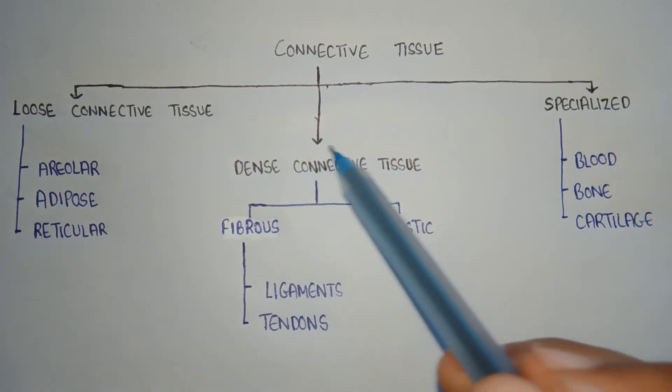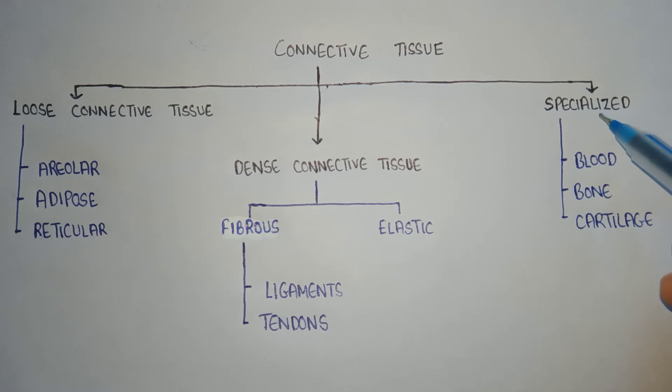This is all about dense connective tissue. The third class is specialized connective tissue. In specialized connective tissue, we have three examples: blood, bone, and cartilage. These are the examples of specialized connective tissue.